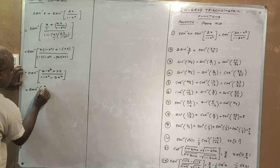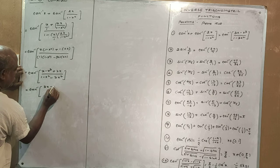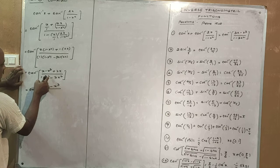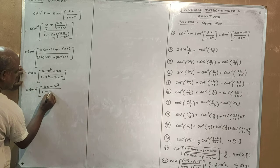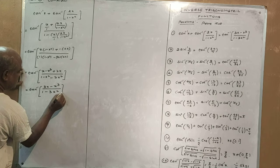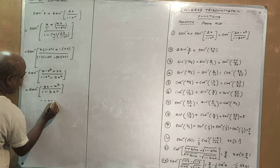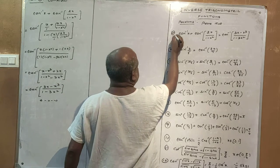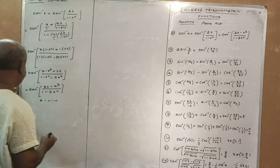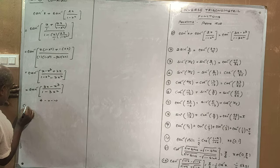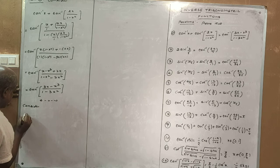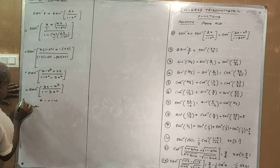Simplifying: 2x plus x is 3x, minus x cubed, over 1 minus x squared minus 2x squared, which gives 1 minus 3x squared. This completes the proof. Now we move to solution for problem 2.